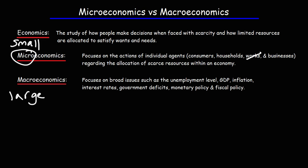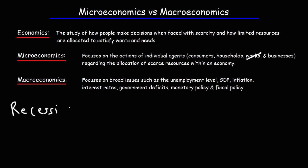Macroeconomics is used to measure the overall economy, and that's important because sometimes the economy could be in trouble — it could be in recession, or sometimes it could be expanding too quickly. Governments tend to use monetary policy and fiscal policy to adjust the economy accordingly. For instance, let's say that we are in a recession. What are some tools that they have to speed up the economy in a situation like this?